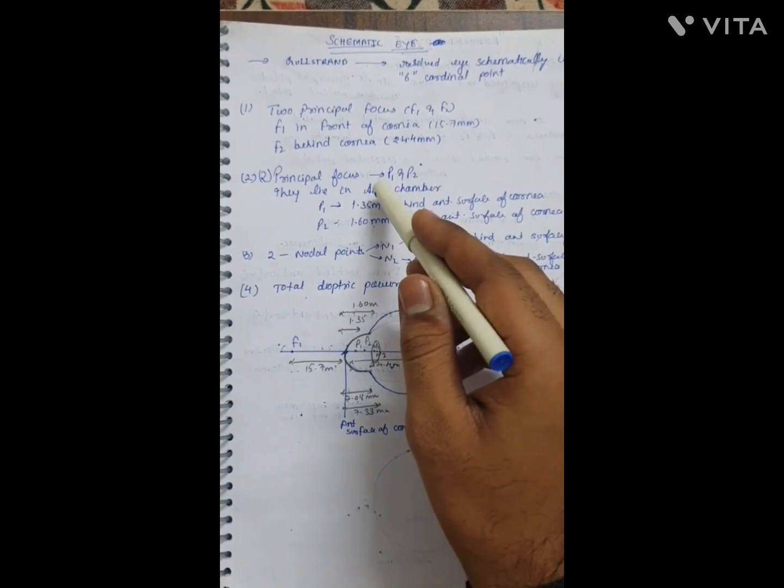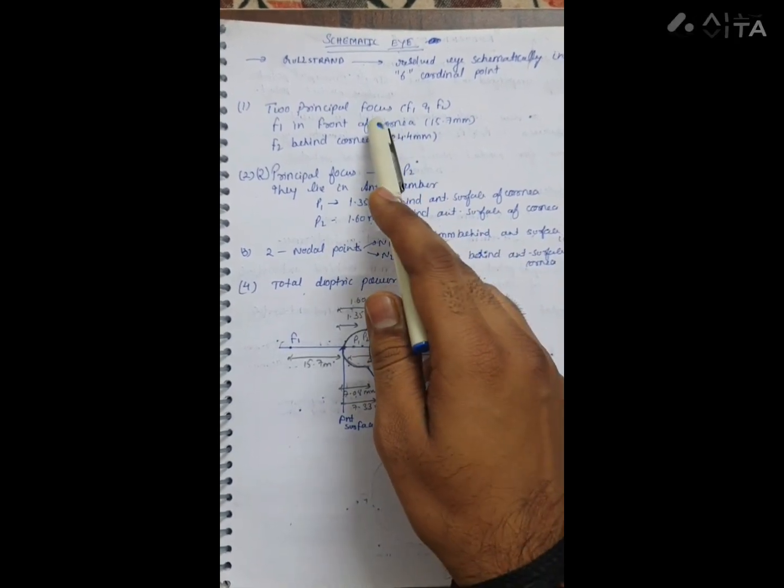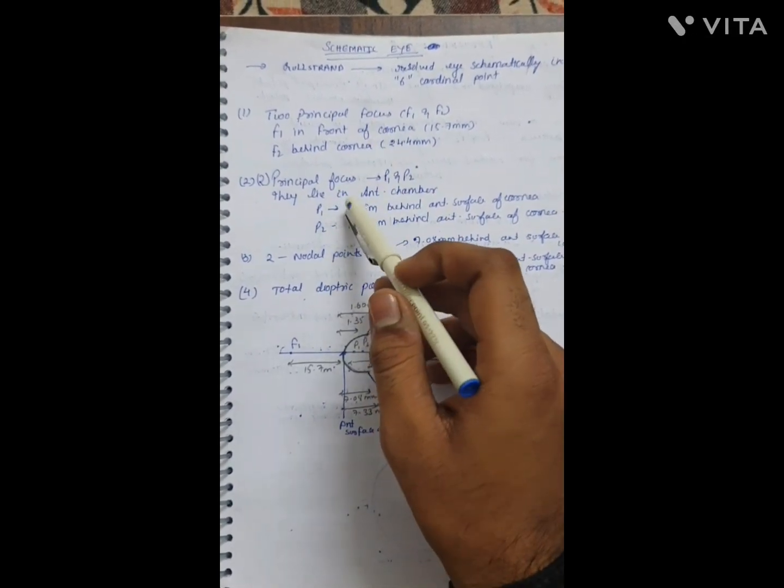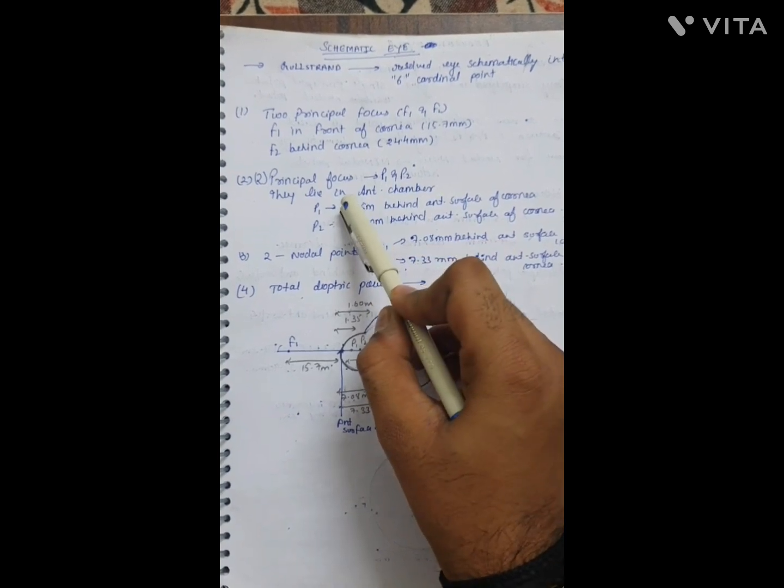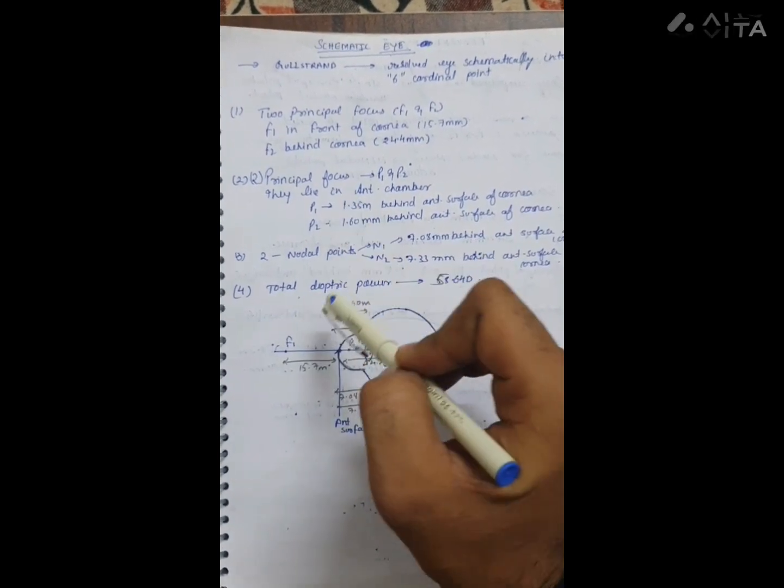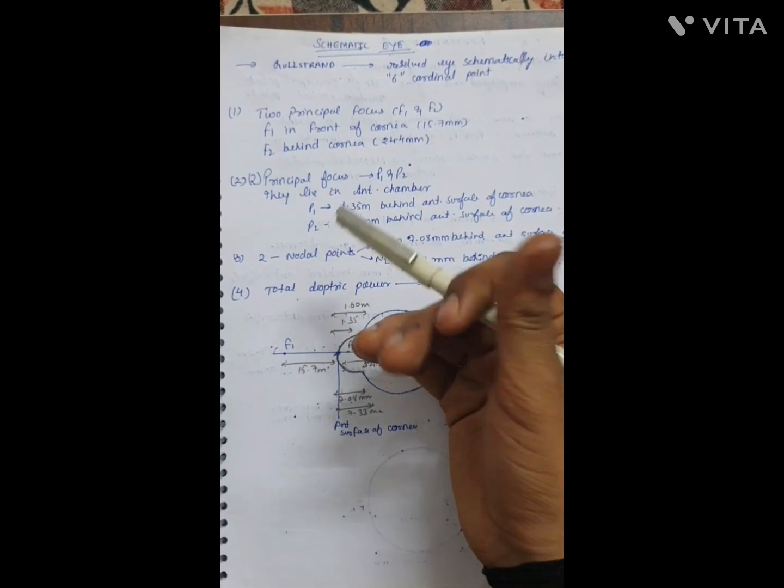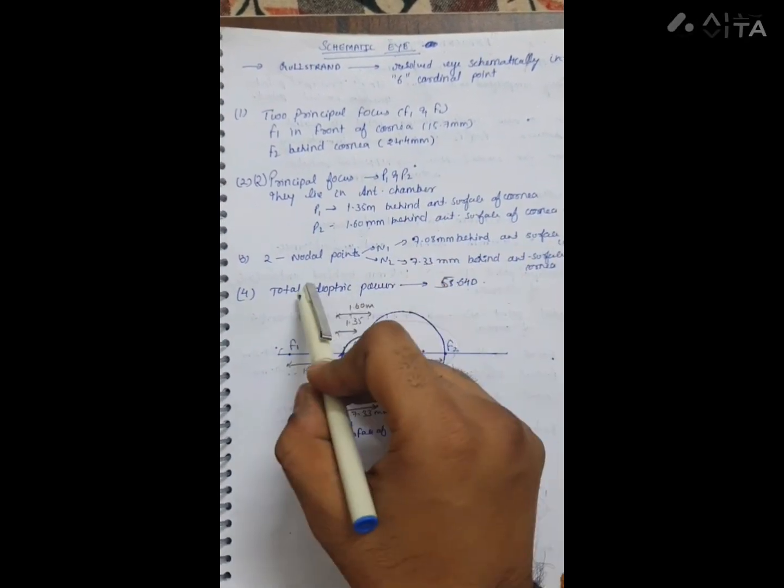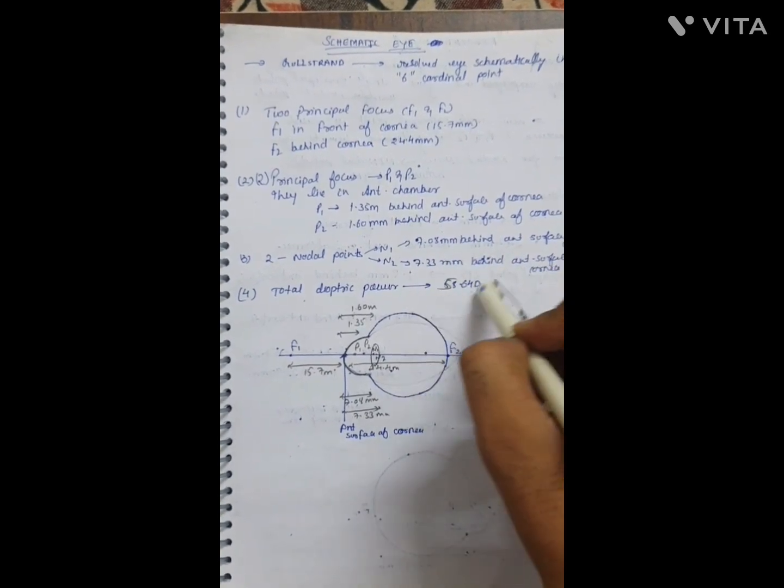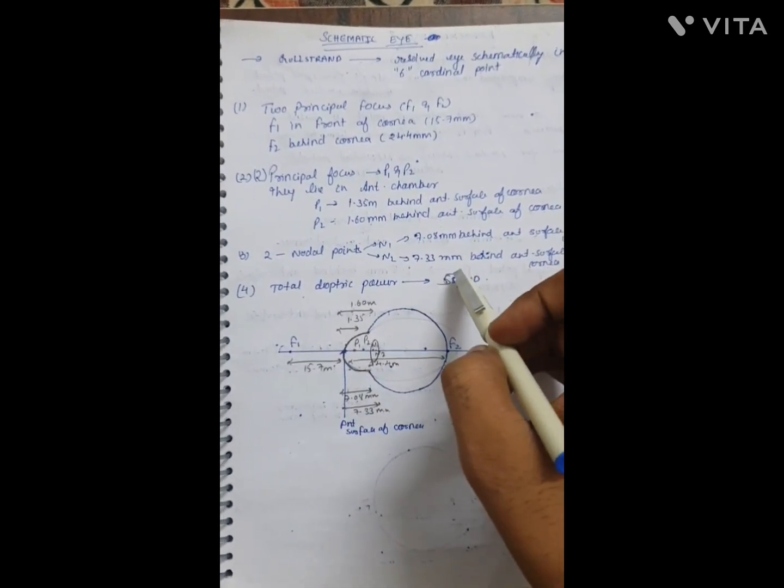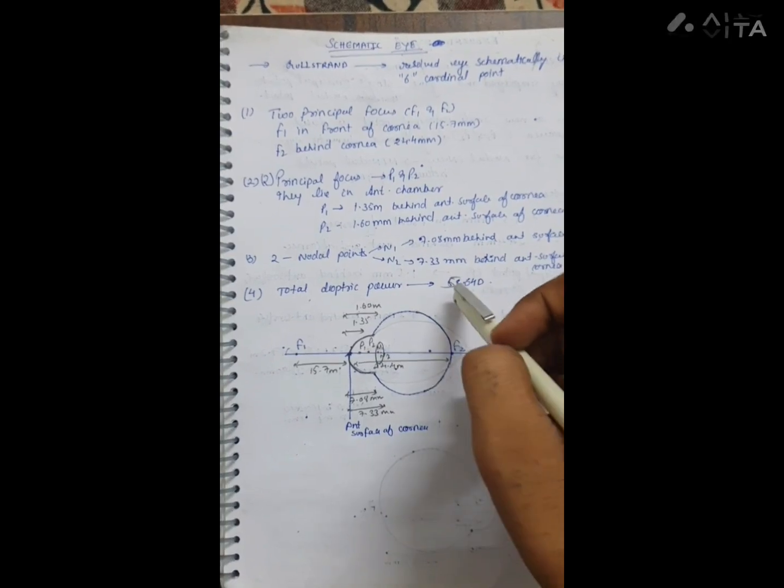In total, there are six points: two principal focus F1 and F2, two principal points P1 and P2, and two nodal points N1 and N2. The total dioptric power of this schematic eye is 58.64 diopter.